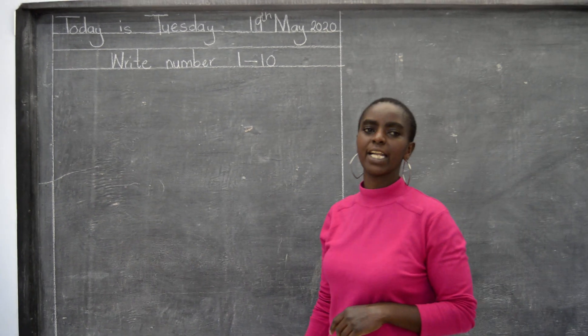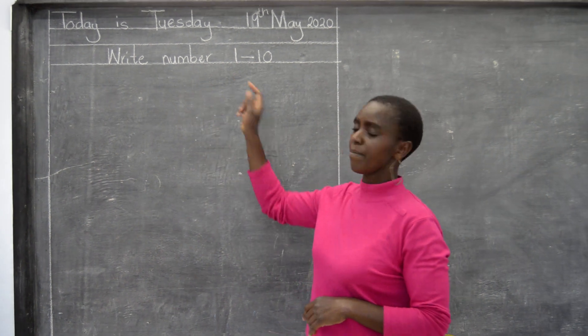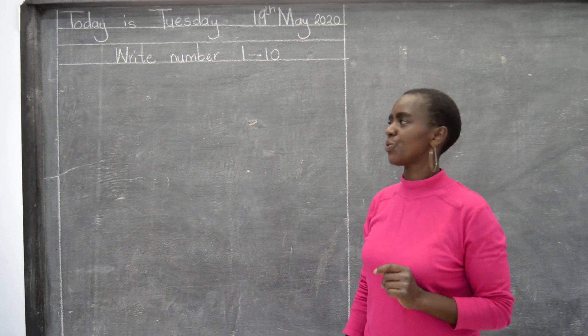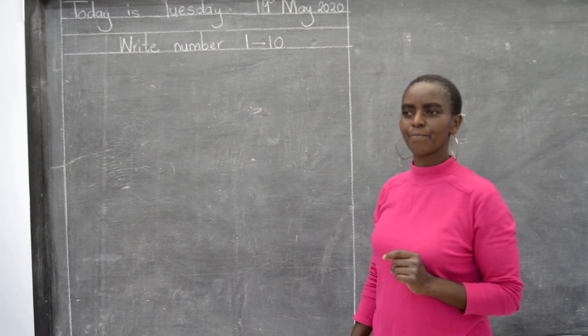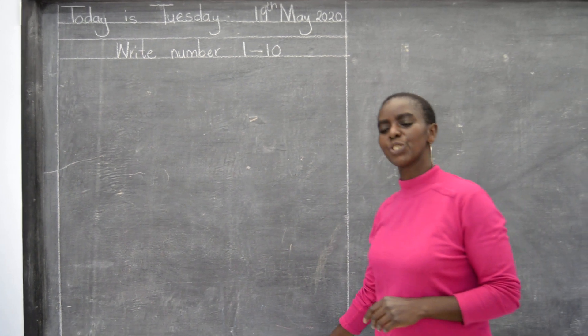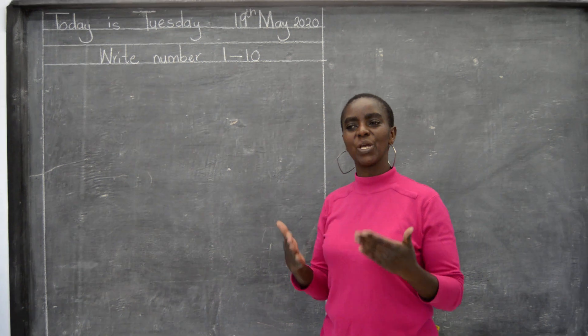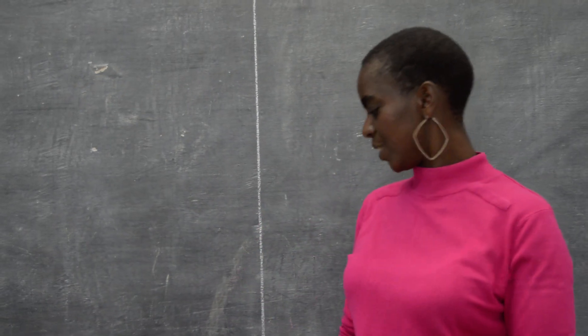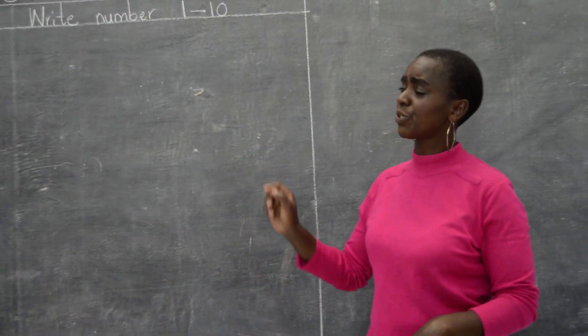Today we are going to learn how to write numbers from 1 to 10, and I want you to help me write the numbers. And we sing the song — Zoom, Zoom, Zoom. I want to go to school and learn numbers: 1, 2, 3, 4, 5, 6, 7, 8, 9, 10. Good. We have learned that song, so we want to write numbers.